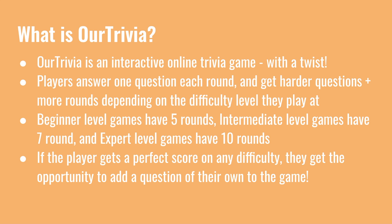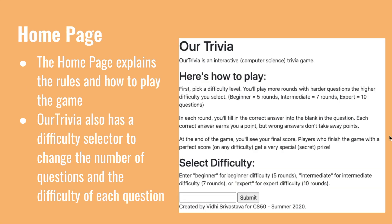But at the end, if a player gets a perfect score on any difficulty, they get an opportunity to add a question of their own into the game. When they open up Art Trivia, it'll take them to the homepage, which explains the rules and how to play the game. It also has a difficulty selector at the end to change the number of questions and the difficulty of each question.